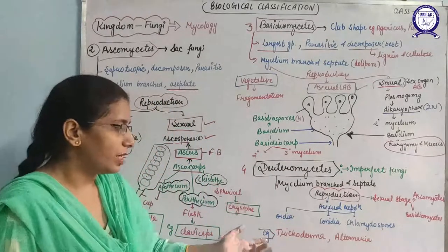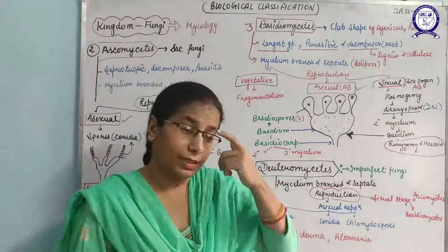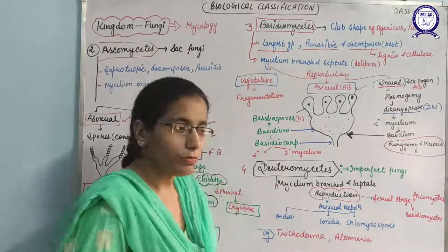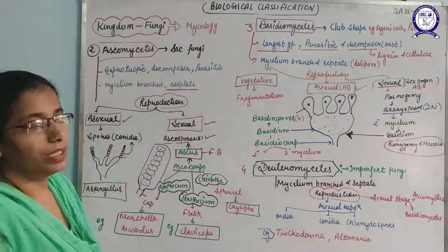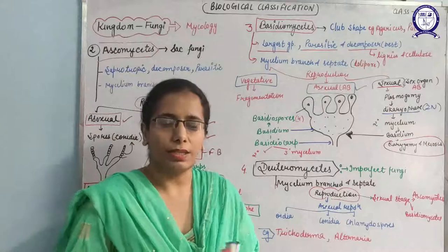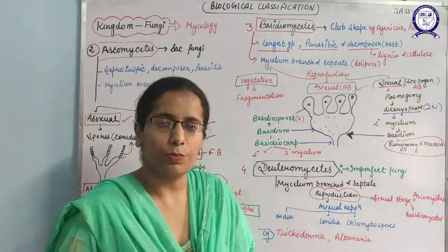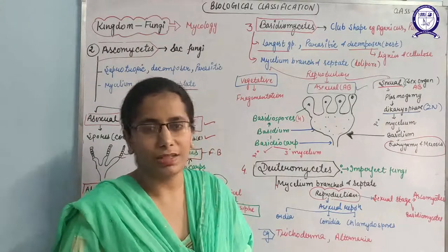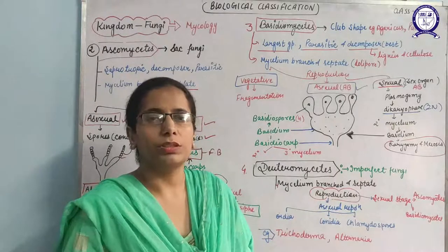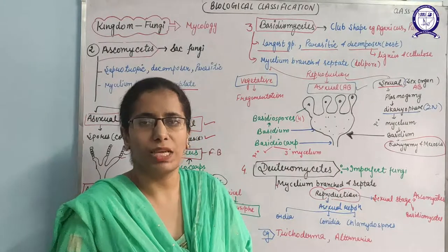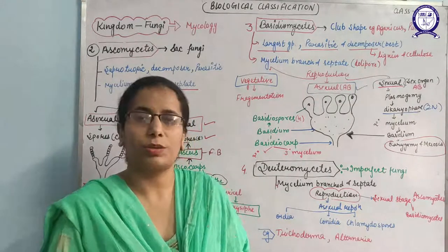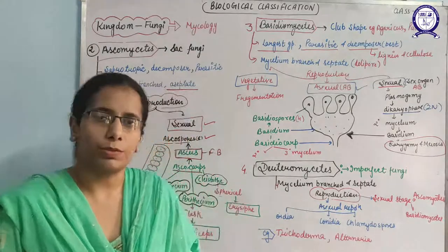In Deuteromycetes, asexual spores such as oedia, conidia, or chlamydospores are formed. Examples include Trichoderma and Alternaria. These also cause a number of diseases in human beings, like ringworm, which causes skin irritation. To summarize: fungi are decomposers and saprotrophic in nature, cause diseases in plants and animals, and are divided into Phycomycetes, Ascomycetes, Basidiomycetes, and Deuteromycetes on the basis of mycelium, hyphae, reproduction, and septa.